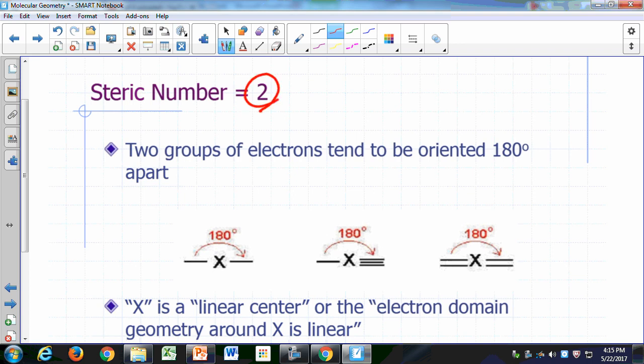In this case, we expect the atom, let's say x here is our atom, we have two groups of electrons sticking out of it. For these two groups to be as far away from each other as possible, they have to be sticking out in opposite directions. So we say that the angle between those two groups is 180 degrees.